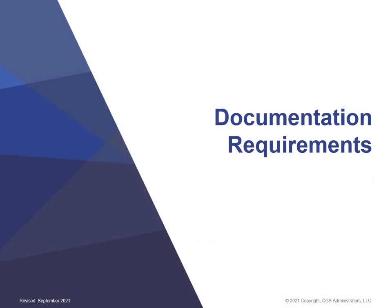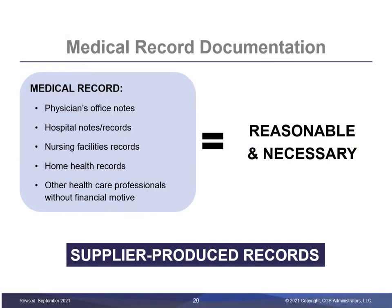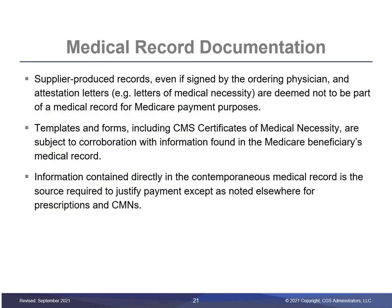In this next section, we will review documentation requirements. Medical record documentation is an extremely important part of Medicare coverage — it makes the determination for whether the Medicare coverage criteria has been met. Medical records may come from any source where healthcare professionals have provided care without a financial motive. Supplier-produced records cannot be used to support medical necessity, even if signed by the ordering physician, and this includes attestation letters and letters of medical necessity. Templates and forms, including CMS Certificates of Medical Necessity (CMNs), are subject to corroboration with information found in the beneficiary's medical record. Information contained directly in the contemporaneous medical record is the source required to justify payment, except as noted elsewhere for prescriptions and CMNs.